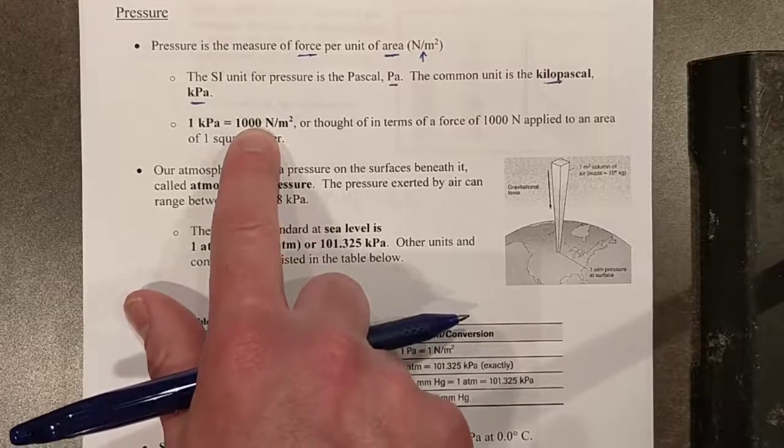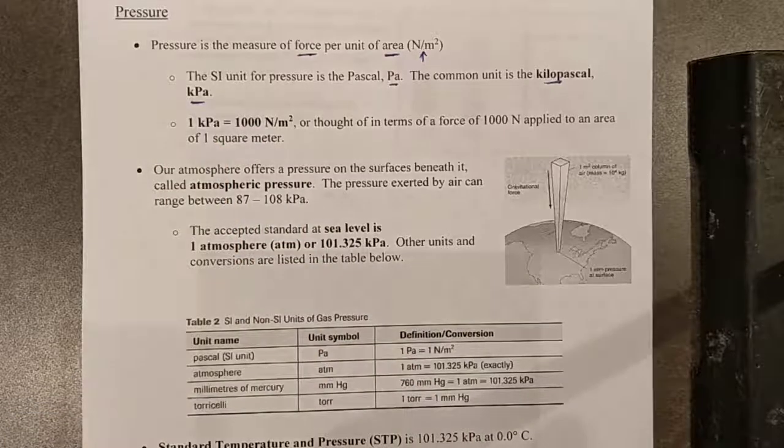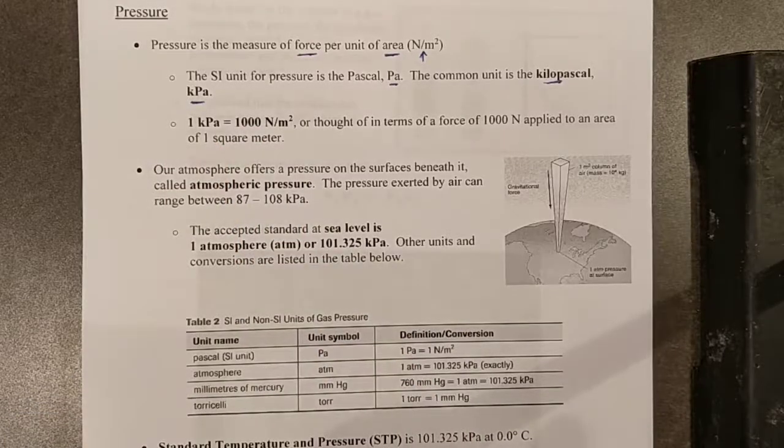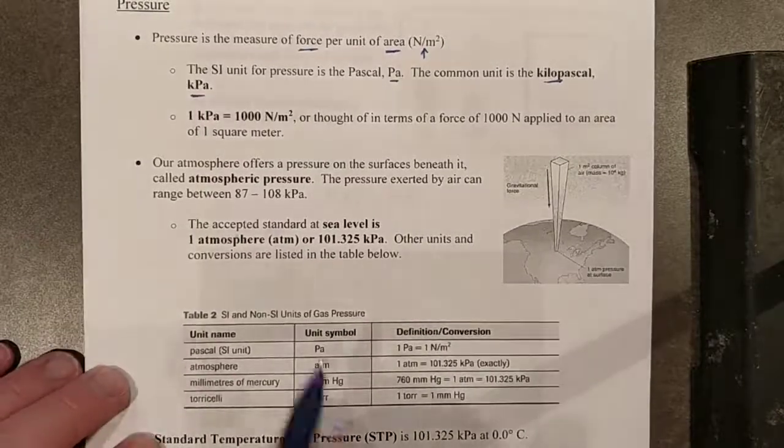So it gives you something to relate to this number. If I was to spread myself over one square meter, I am roughly offering one kilopascal of pressure. It's not a lot. Okay, so what does our atmosphere, which is made of gas, offer?